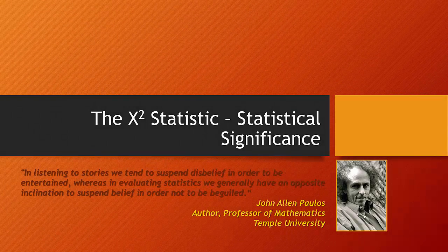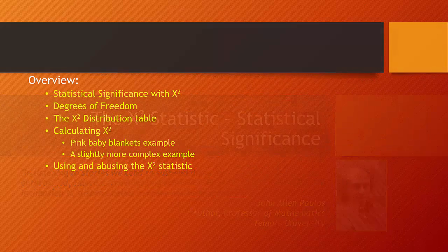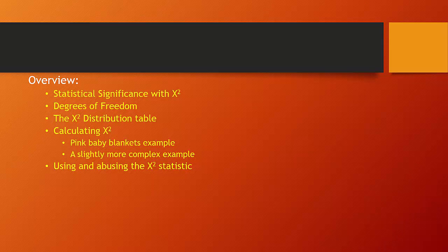Now that we understand the basics of co-variation, let's get into some of the nuts and bolts of how to determine statistical significance. We're going to talk about the most basic way to determine statistical significance through the use of the chi-square statistic.